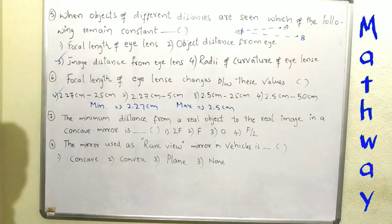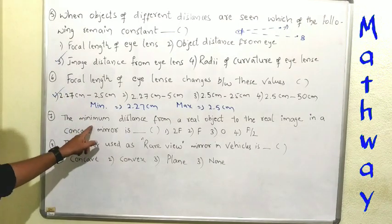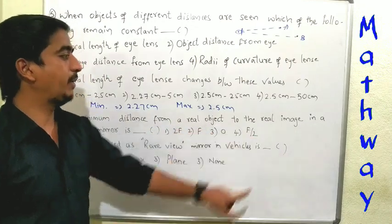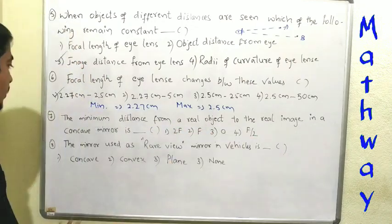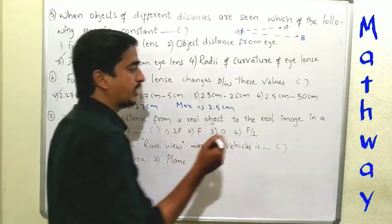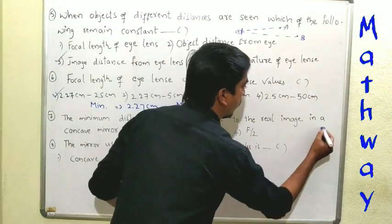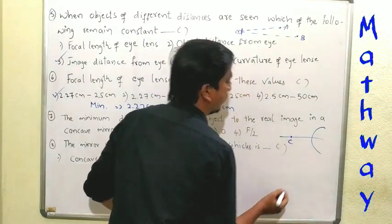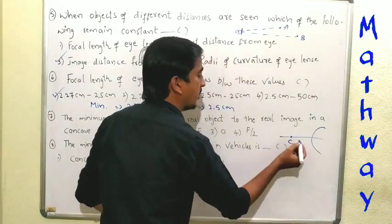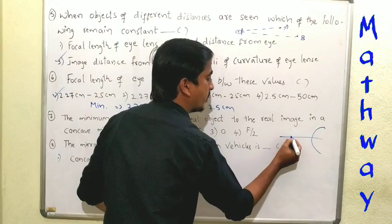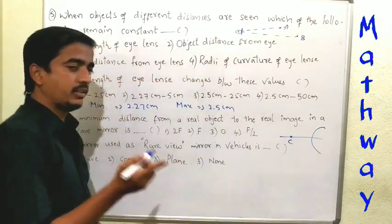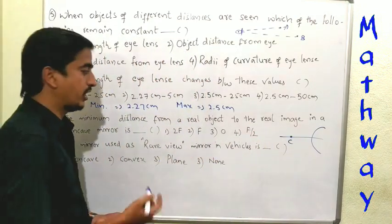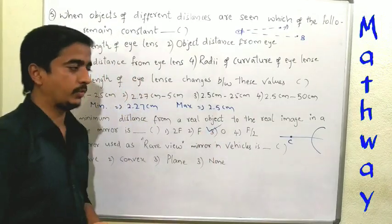Seventh question: the minimum distance from a real object to the real image in a concave mirror. If the object is at C, then the real image also forms at C. The object and image are at the same point, so the distance is 0.